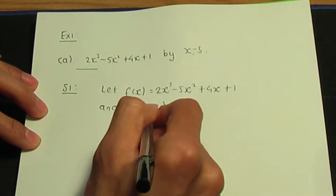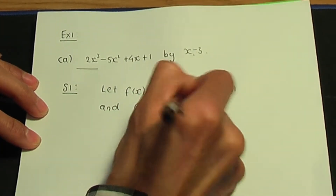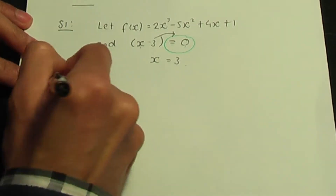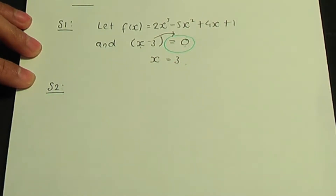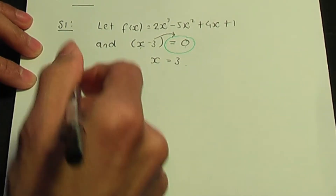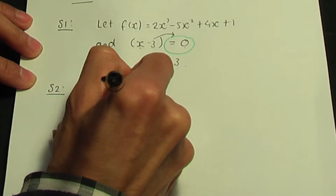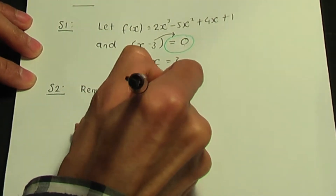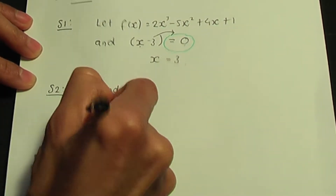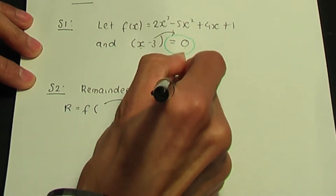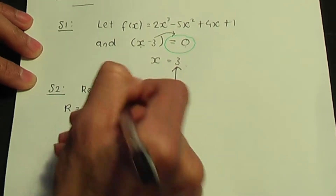So if I rearrange, the x value — when I take the minus 3 to the opposite side — is plus 3. So that takes us to step number 2. In order to work out the remainder, I use r for the remainder. To calculate r, it's f of this value of x that you worked out in step 1. So we need to calculate f(3).